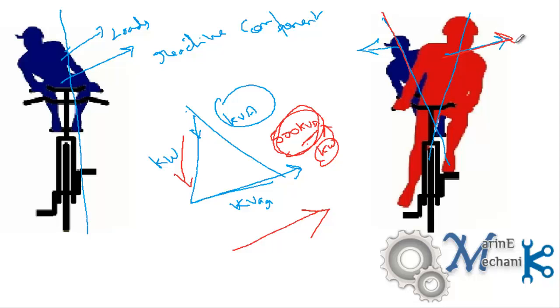So when a load leans out, the generator has to lean opposite just to maintain the balance. So this is the reactive component.